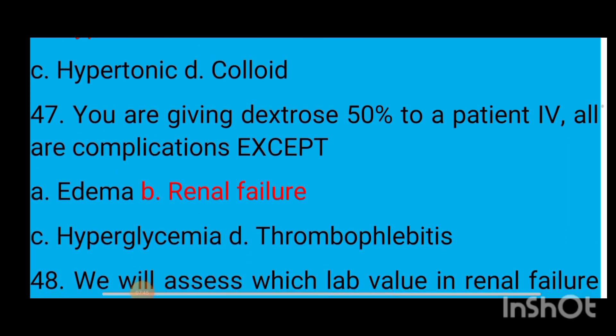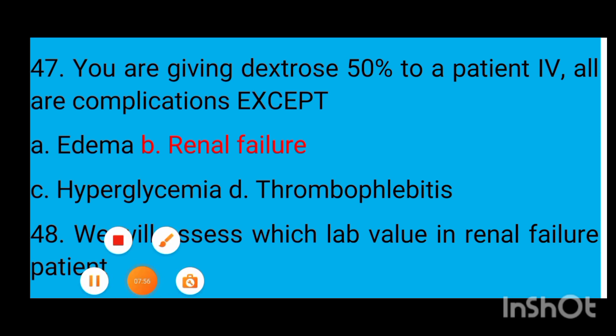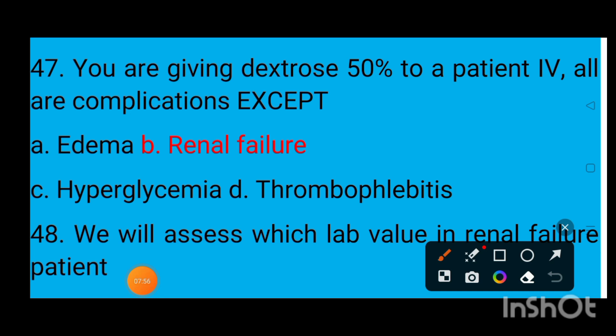Question number 47: You are giving dextrose 50% to a patient IV. All are complications except — option A edema, option B renal failure, option C hyperglycemia, option D thrombophlebitis. The correct answer is option B — renal failure.